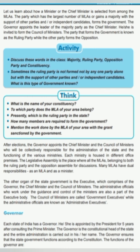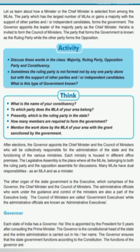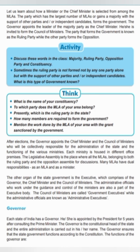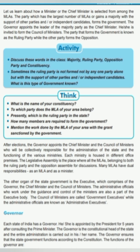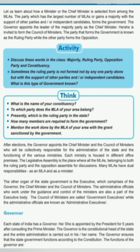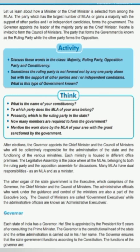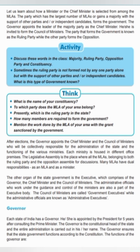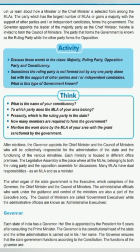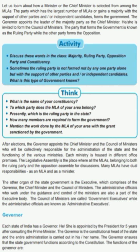The parties other than the ruling party are called the opposition party. For example, the Indian National Congress is the main opposition party in Gujarat. The seats of the Legislative Assembly are decided on the basis of population — one seat is allotted for a population of 75,000 people. The area of that seat is called a constituency. Sometimes, the ruling party is not formed by one party alone, but with the support of other parties and/or independent candidates. This kind of government is called an aligned government.